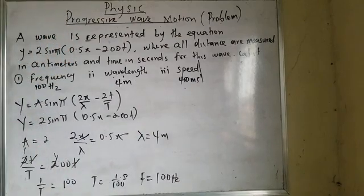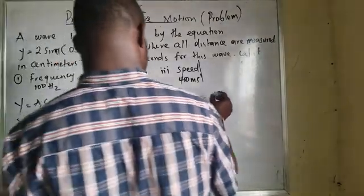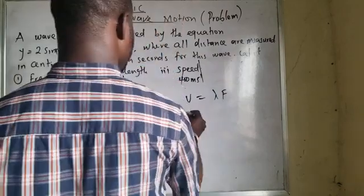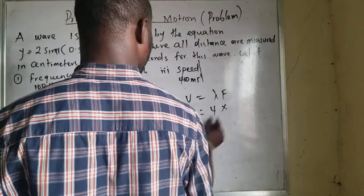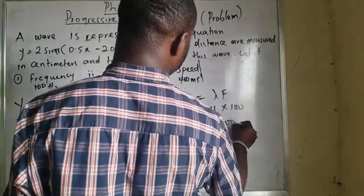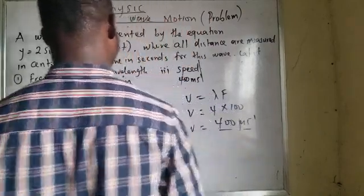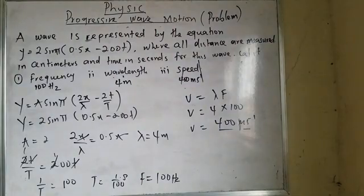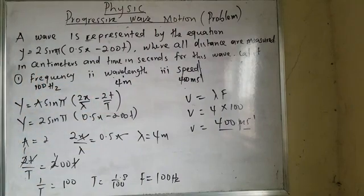By doing that, I can now move on to my speed, which is going to be lambda times frequency. My lambda is 4 multiplied by frequency 100, which equals 400. Can you see? I have the same answer. I have used equation 1, equation 2, and equation 3 — can you see how important these equations are? Don't forget, we're at home with Further Solutions Academy. Once again, thanks for watching.